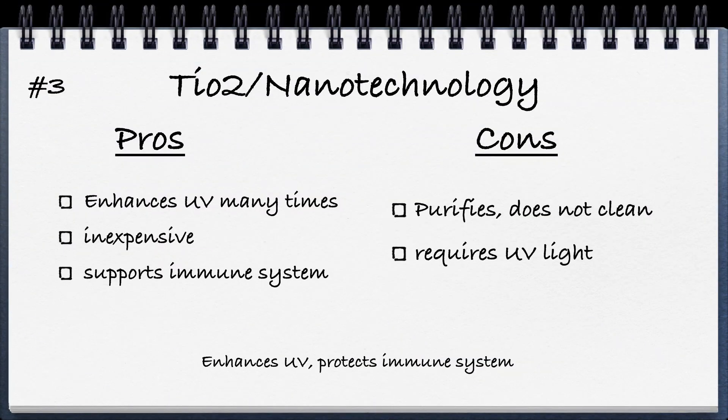Next is TiO2 nanotechnology, which goes along with UV — it enhances UV many times over. It's inexpensive and supports the immune system by enhancing UV. Cons: it purifies but doesn't clean, and you must have UV light for it to work. But it's inexpensive enough and a nice addition to make UV more effective.